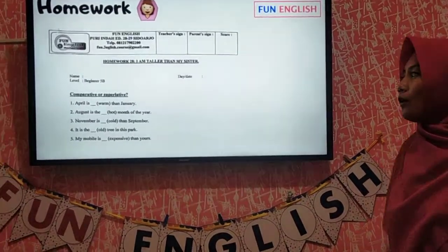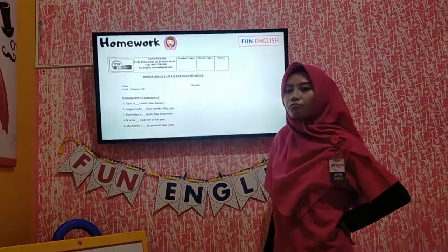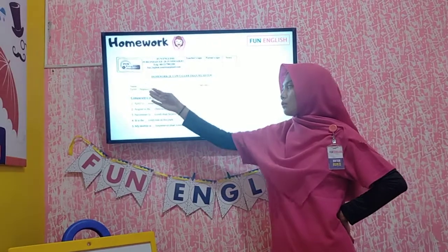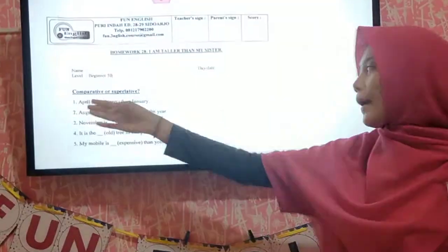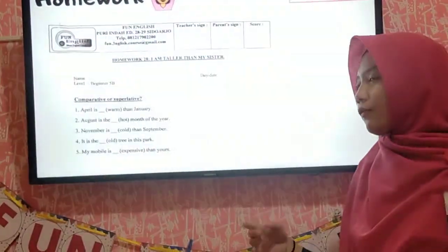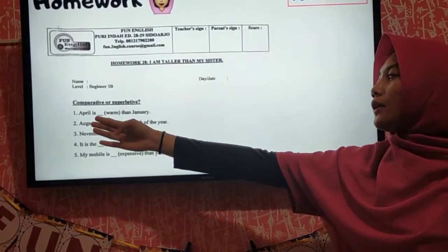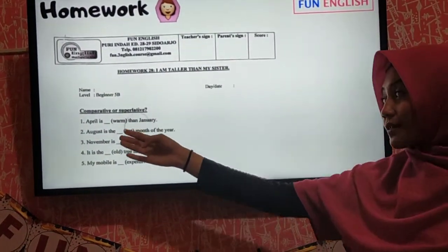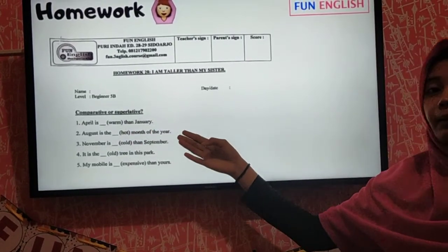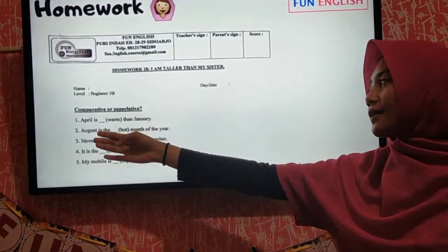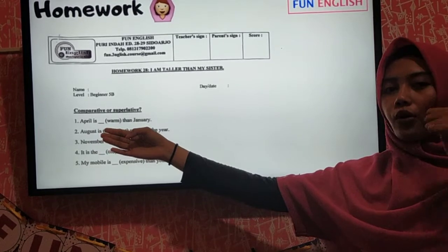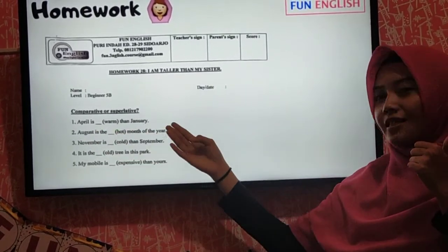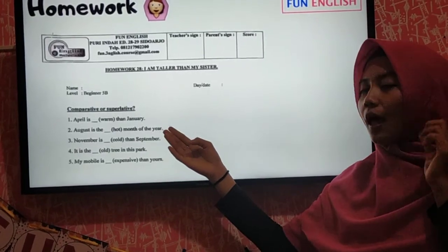Homework. The homework is really easy — you only choose whether it is comparative or superlative. For example, number one: 'April is ___ than January.' There is 'than,' so it is comparative. April is warm — only one syllable — so it becomes warmer than January.